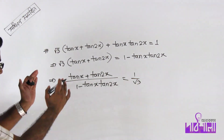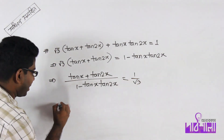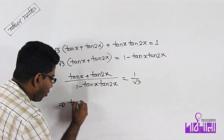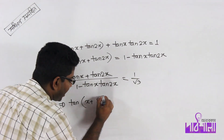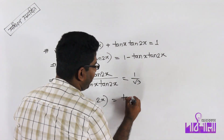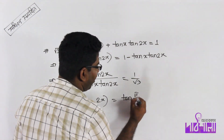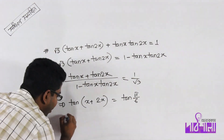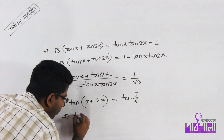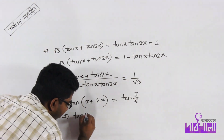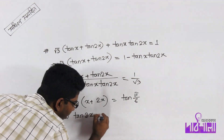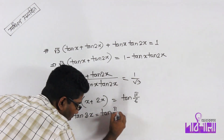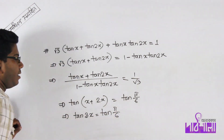So, 2x plus tan x plus tan 2x divided by 1 minus tan x · tan 2x equals 1 by root 3. This gives tan(x + 2x), which is tan(3x), equals tan(π/6), i.e., tan of i by 6.